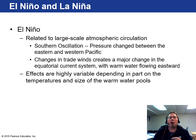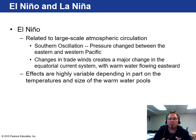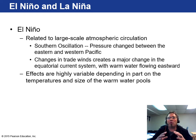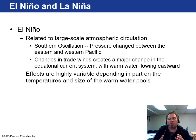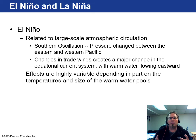El Niño is related to large-scale atmospheric circulation — specifically the Southern Oscillation between the eastern and western Pacific. It changes the trade winds and creates major changes in the equatorial system, essentially altering the entire normal flow. The effects are highly variable depending on where you are and the size of the warm water pool. The larger the El Niño, the more warm water involved, and the more noticeable the effects will be.